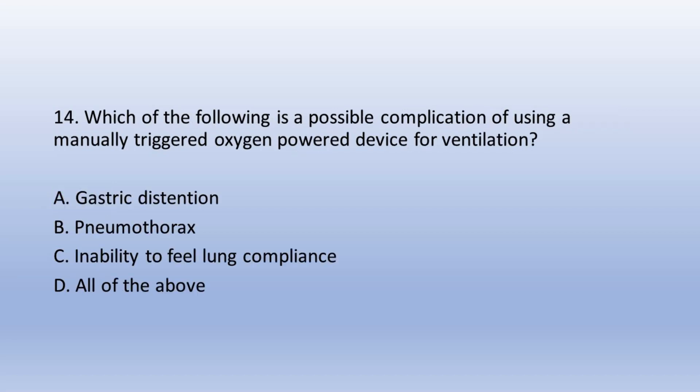Question 14. Which of the following is a possible complication of using a manually triggered oxygen-powered device for ventilation? A. Gastric distension, B. A pneumothorax, C. Inability to feel lung compliance, D. All of the above. The answer is D. All of the above.